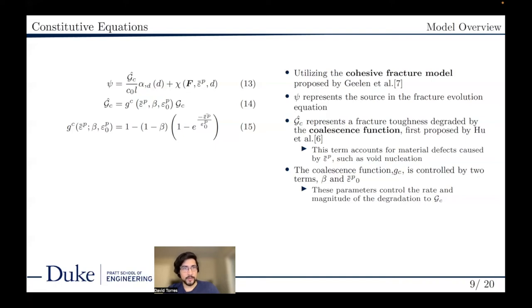The coalescence function varies from a value of one and decreases in the pattern controlled by beta in the reference plastic strain. Beta modifies the minimum degraded value and the reference value modifies the sensitivity of the function to plastic strain. Through this, the fracture toughness is decreased or degraded with plastic strain and allows for the influence of plastic strain on the fracture pattern.